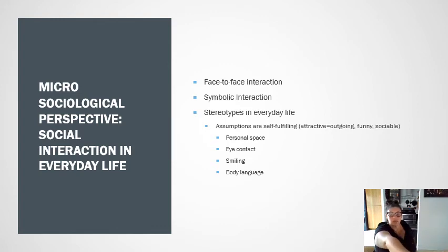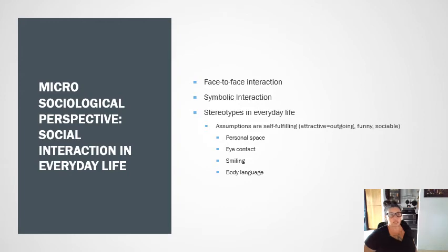In Texas, personal space tends to be around three feet. In some countries with high populations where everybody's crowded in, it tends to be lower — somewhere between 10 and 16 inches. Things like eye contact, smiling, and body language — all of these are symbolic interactionist things. The behaviors that we do and we see recreate what's expected as the norms and the values.